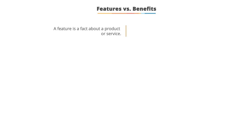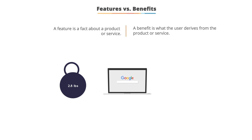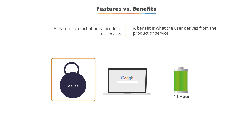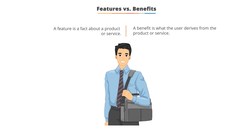A feature is just a bullet point list of true facts about our product or service. A benefit is what a consumer gets out of that product or service — what it does for them. For instance, a laptop weighs 2.8 pounds and has an 11-hour battery life with an 11-inch screen. Those are features. To make a feature into a benefit, finish the sentence: 'It weighs 2.8 pounds, so you can carry a laptop around all day without back and shoulder pain.'